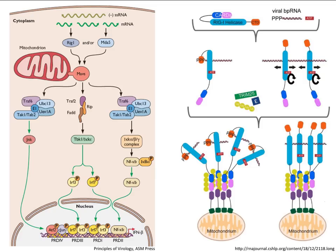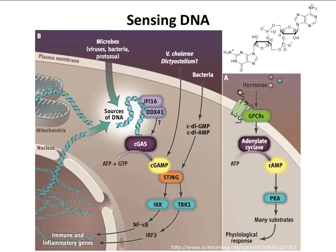RIG-I is normally in the cytoplasm at low levels in an inactive state. When it binds to viral RNA, the molecule unfolds and a domain called the CARD domain is exposed. That CARD domain is what interacts with MAVS on the mitochondrion, and many RIG-I molecules interact on MAVS to start the signaling cascade. The key point is simply that these sensors detect RNA as foreign by virtue of 5' phosphates or double-stranded character, and when they detect it, the cell makes interferon.